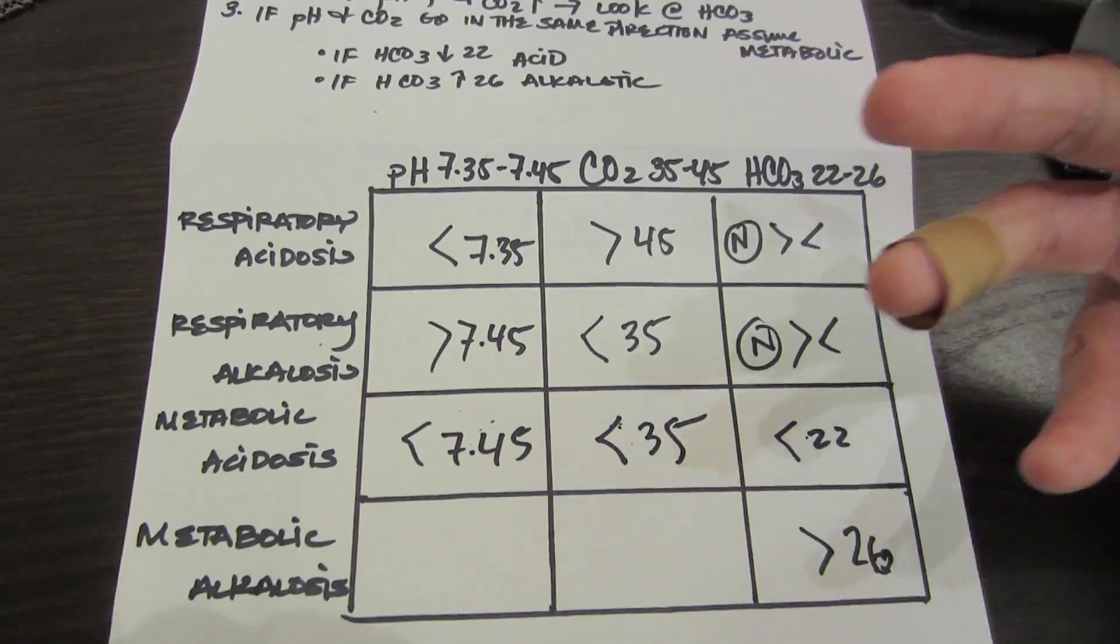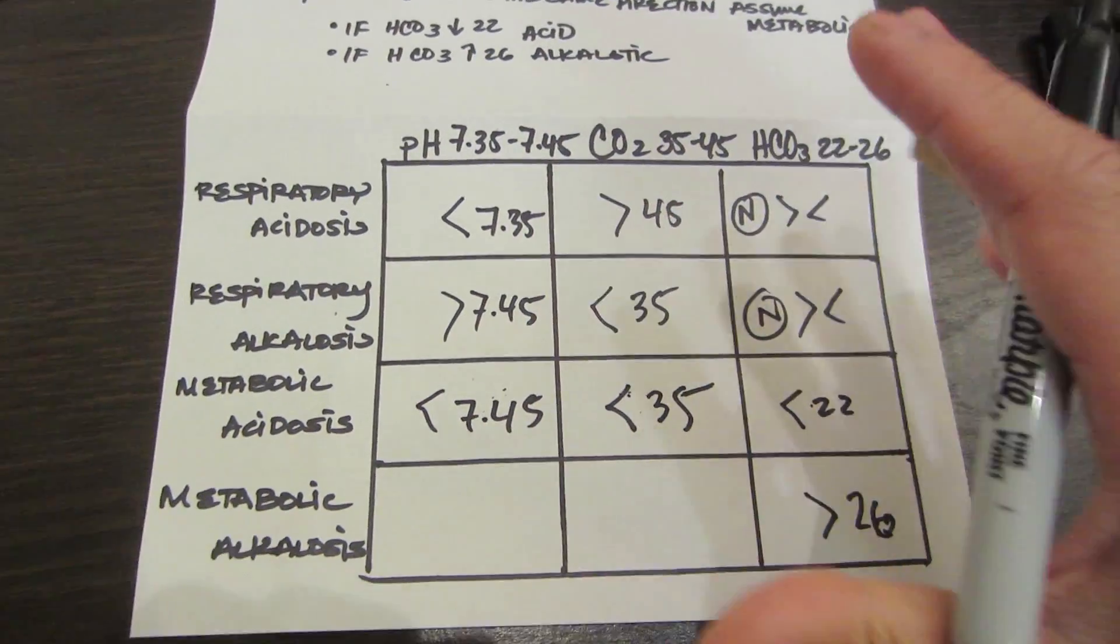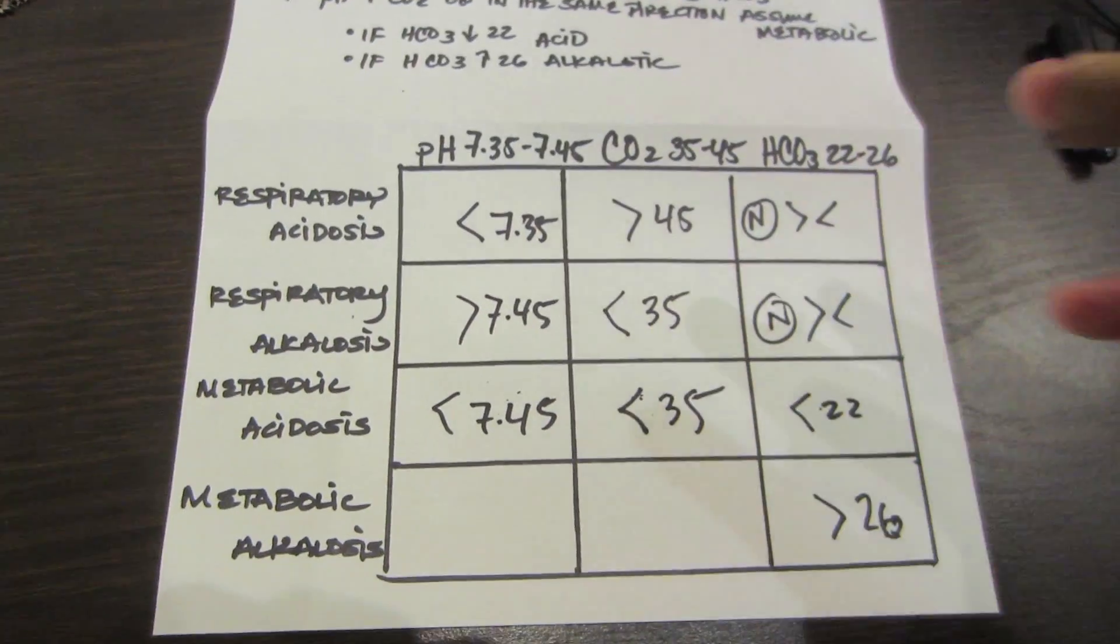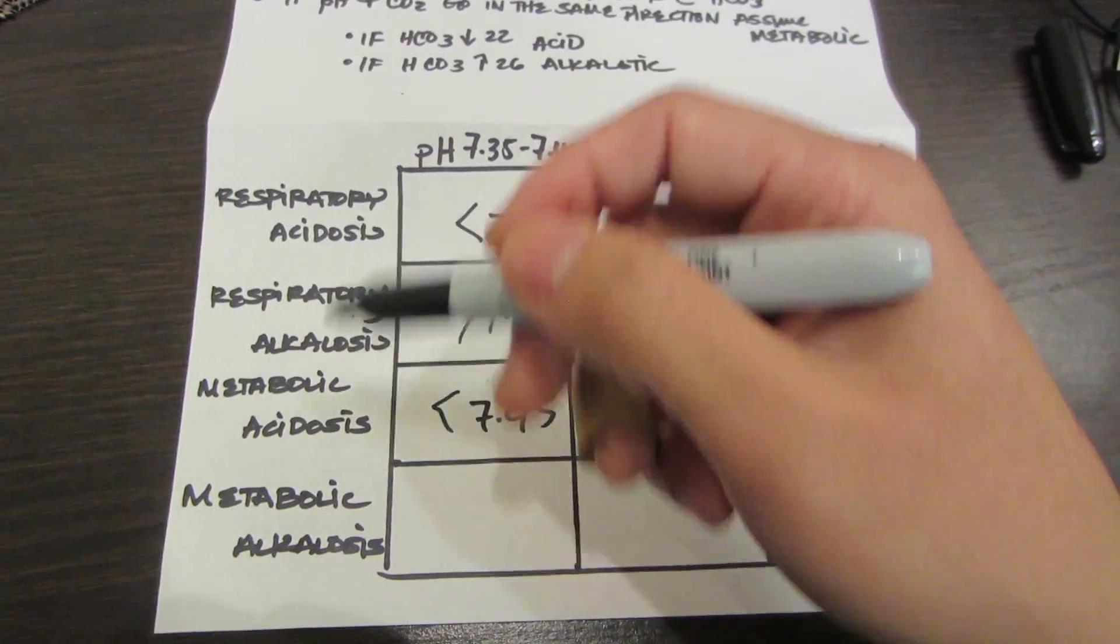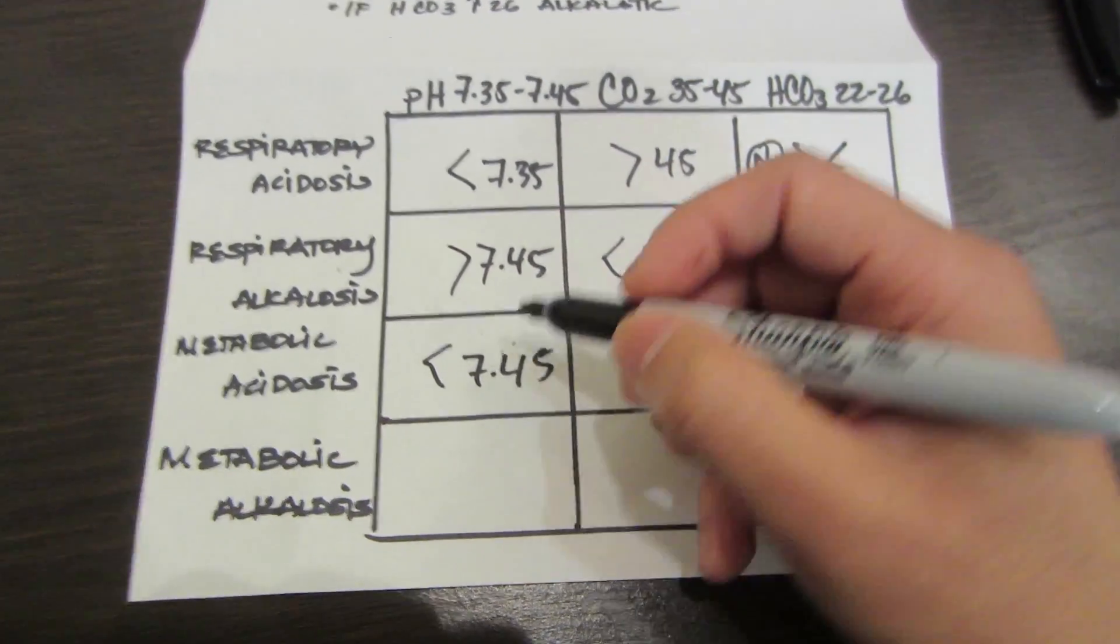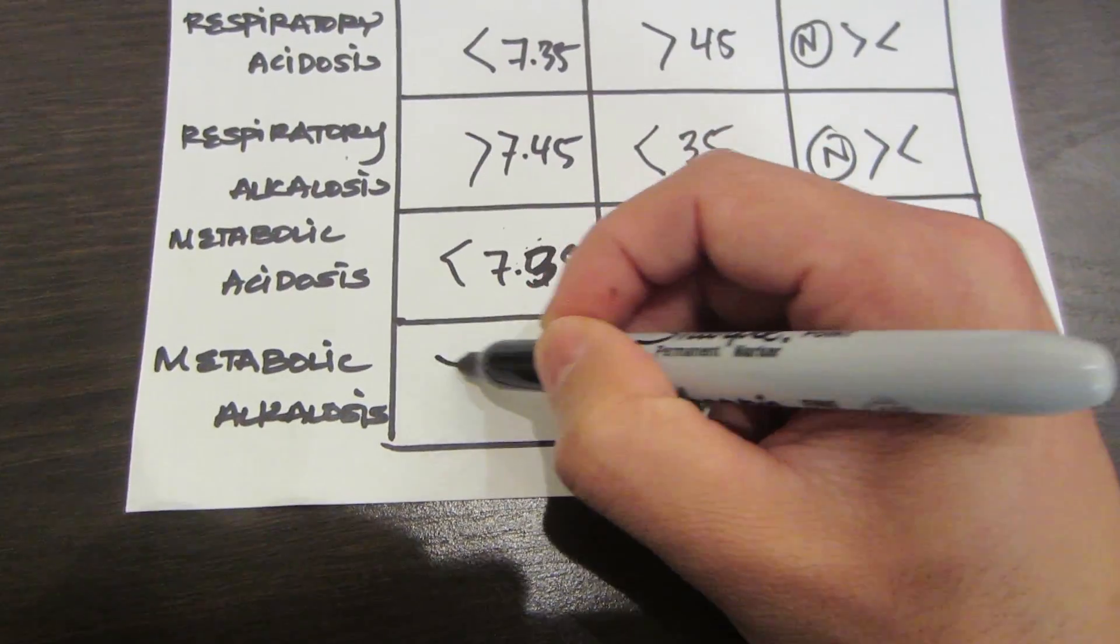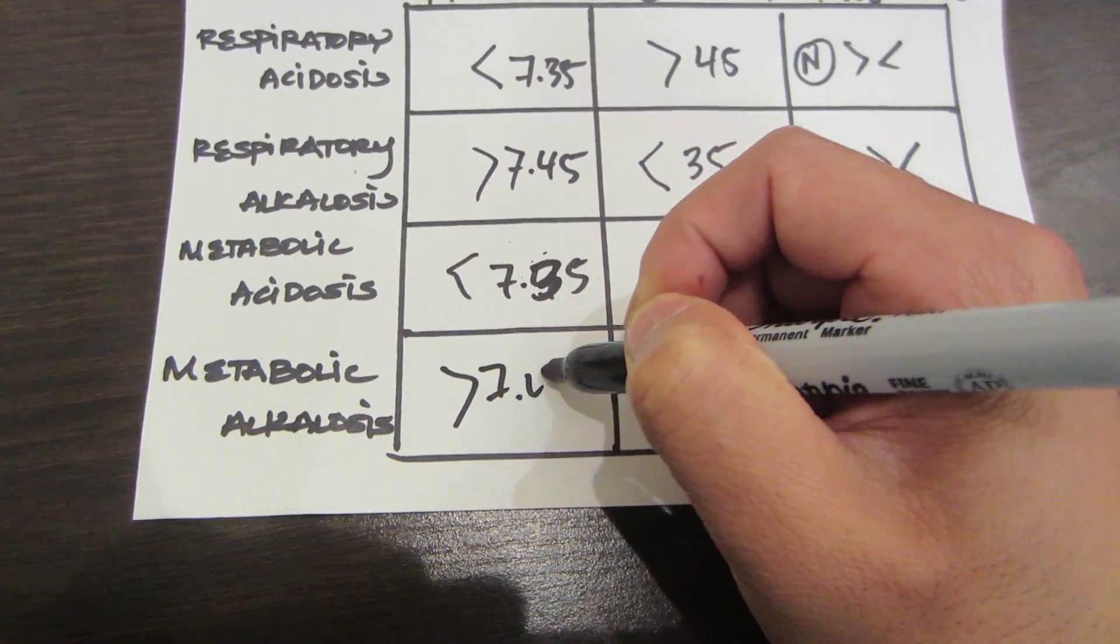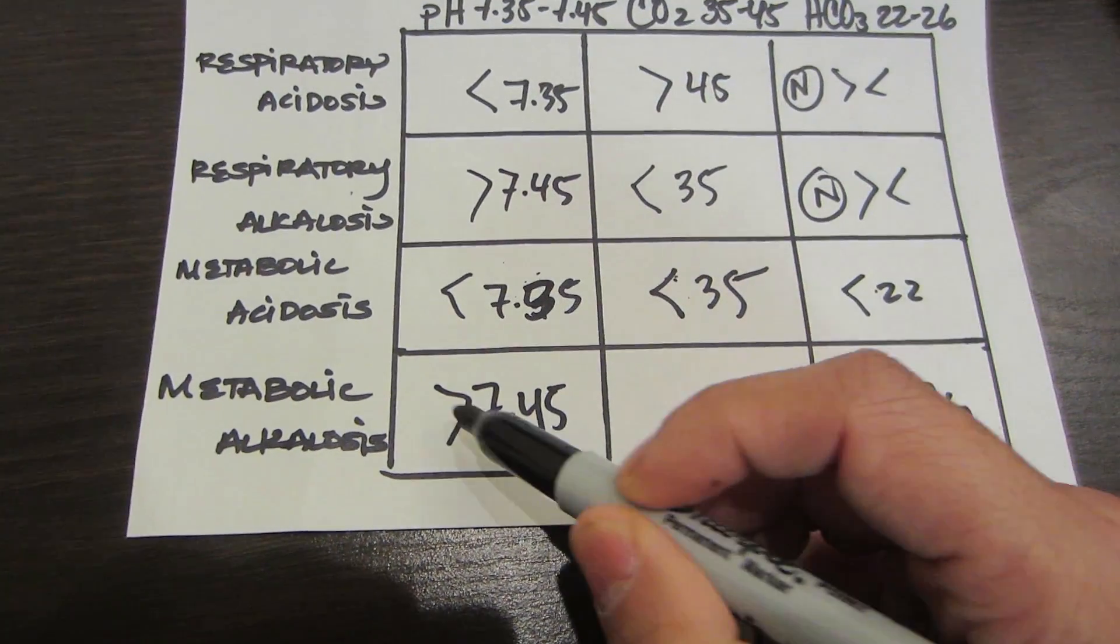In circumstances when you're talking about like compensation, this is gonna be totally different. When I'm talking about compensation, we're just easily talking about identifying these basic ABGs. For alkalosis, remember - this is supposed to be 35, I apologize. So it's gonna be greater than 7.4. Now remember, same direction, it's gonna be greater than 45.